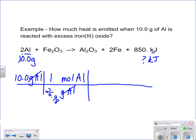So I've got it as moles of aluminum. I want to ultimately get from here over to here. So I get rid of my moles of aluminum and go to my kilojoules. I know that for every two moles of aluminum that react, I can produce 850 kilojoules of heat.